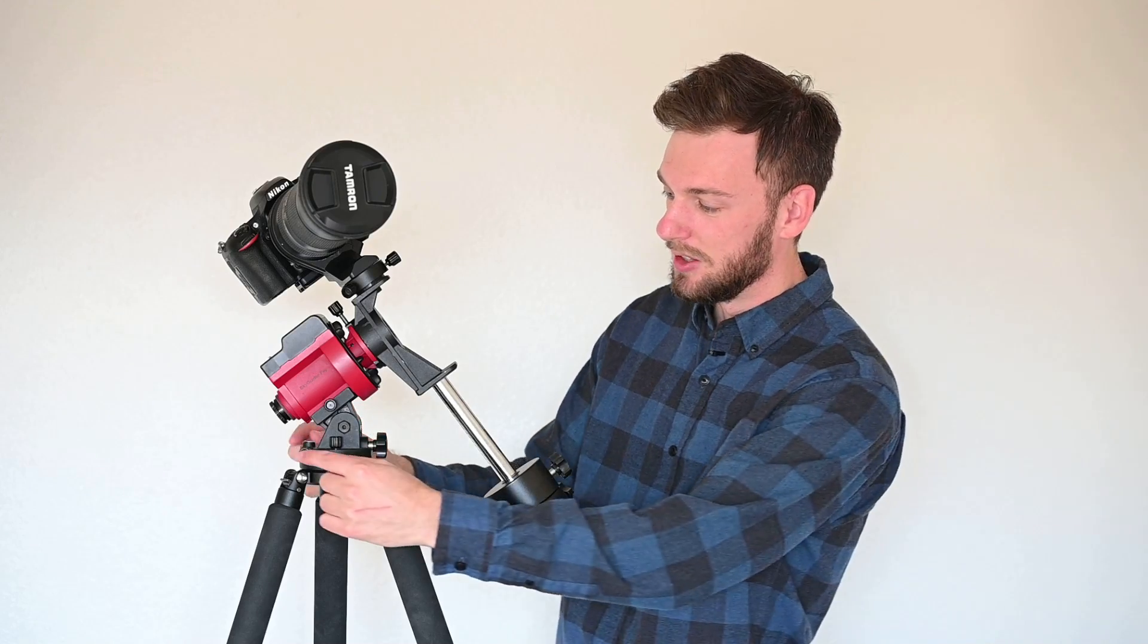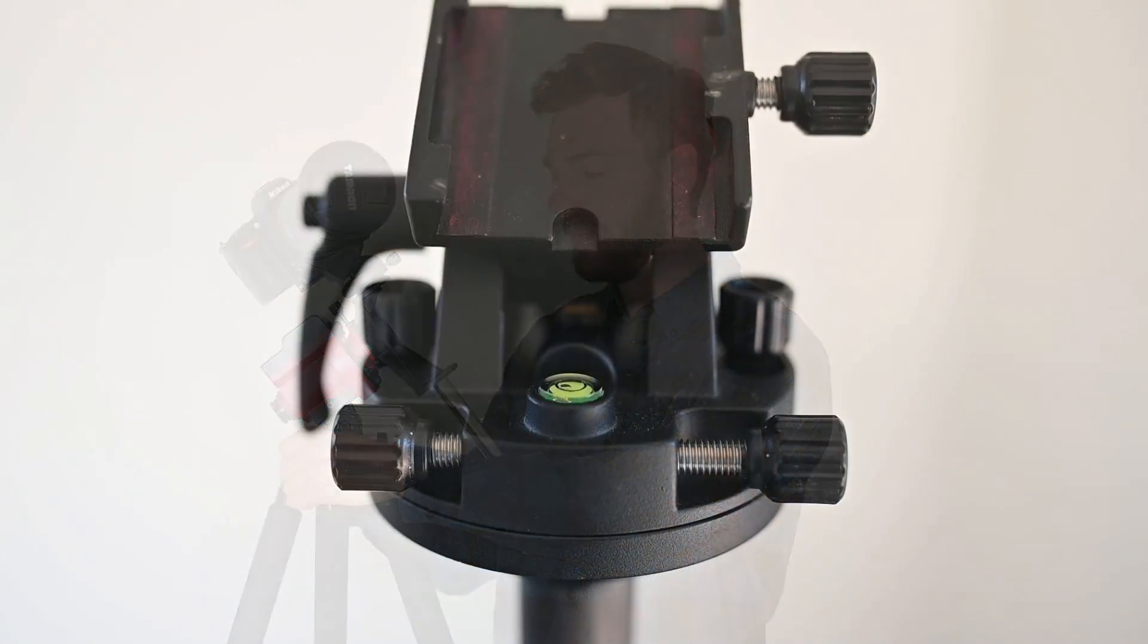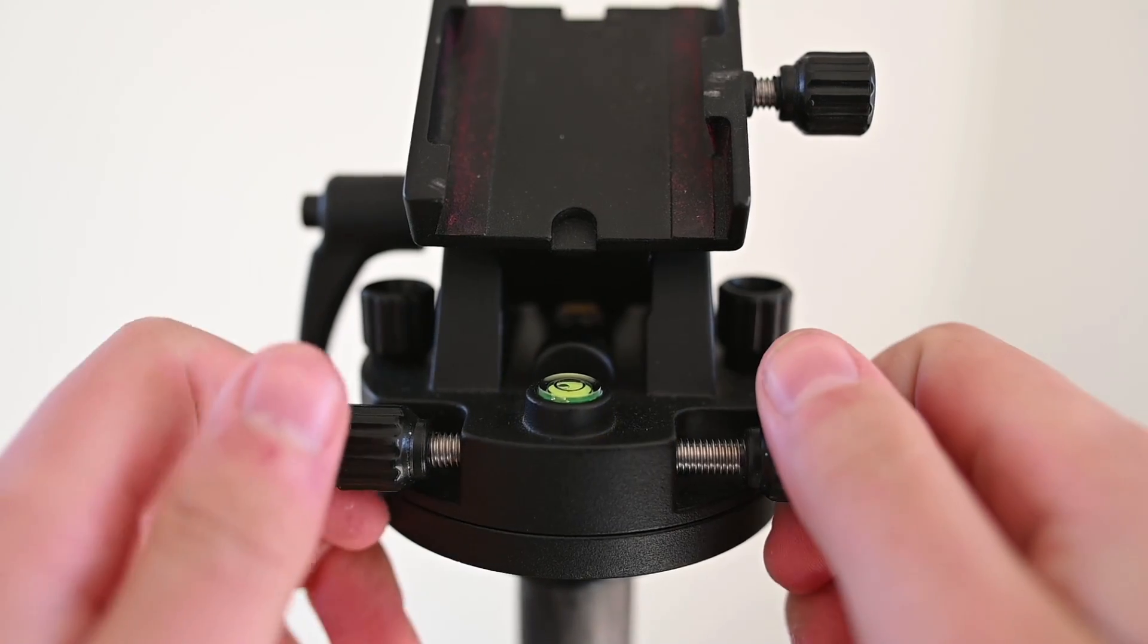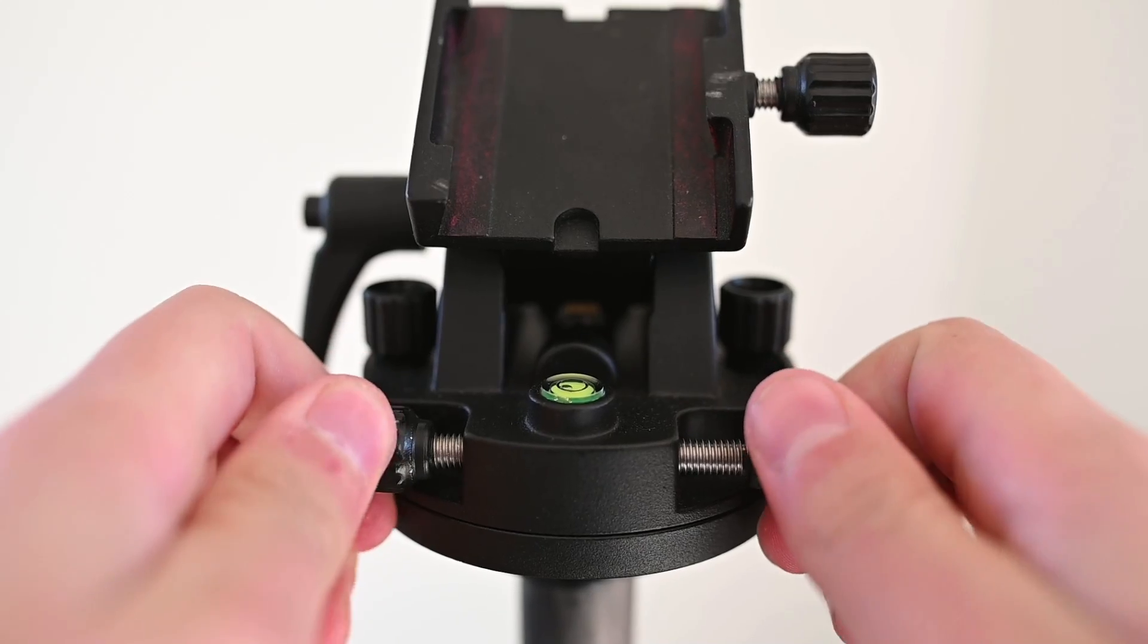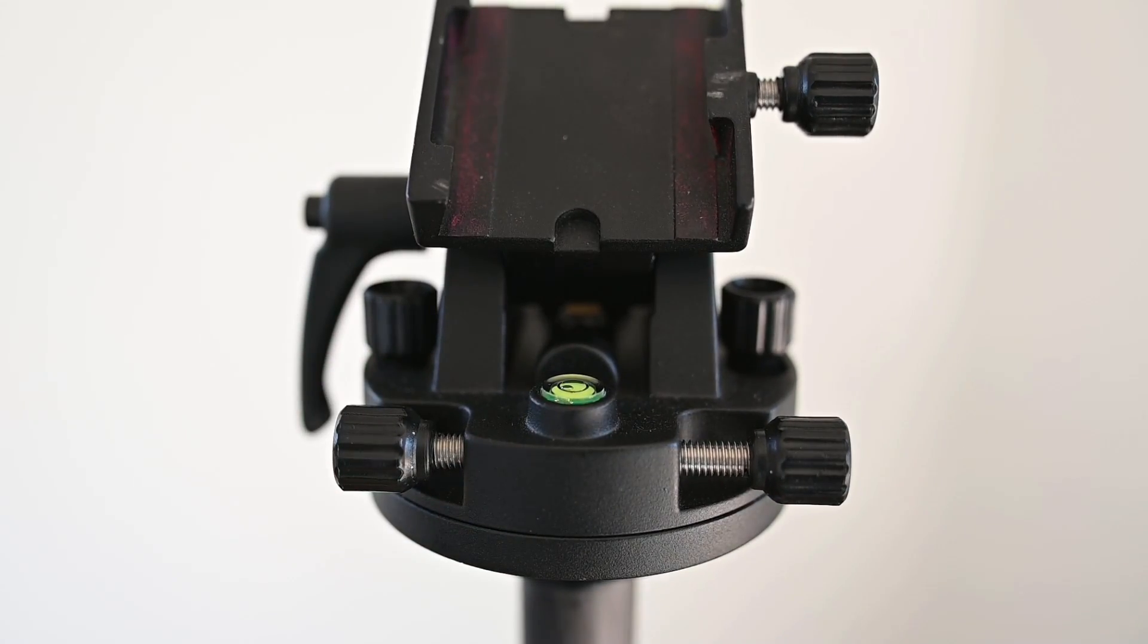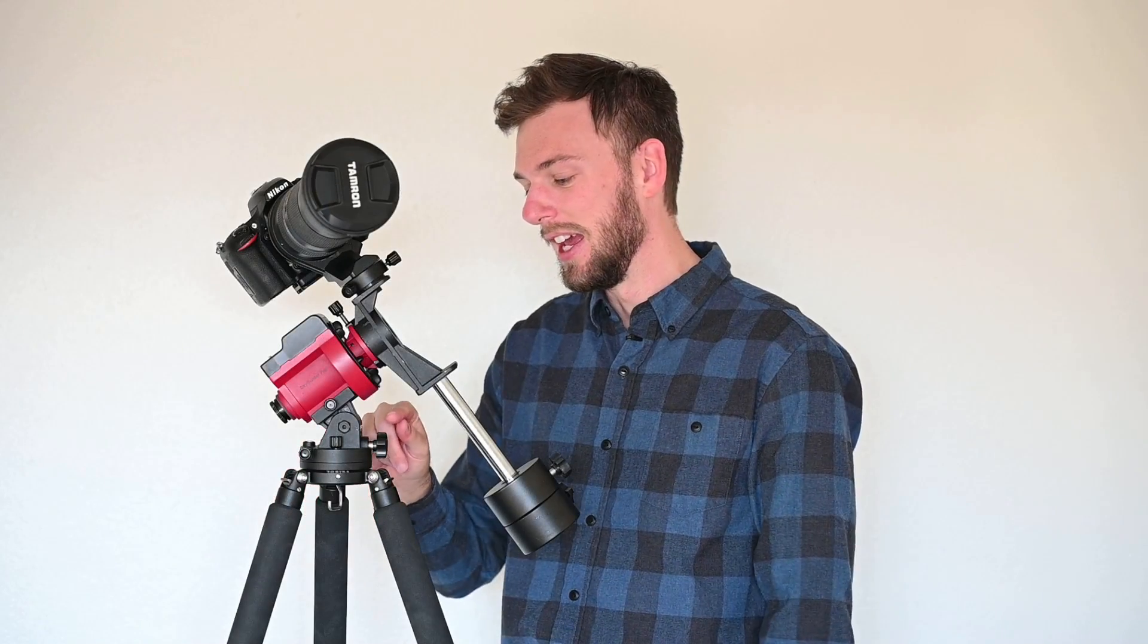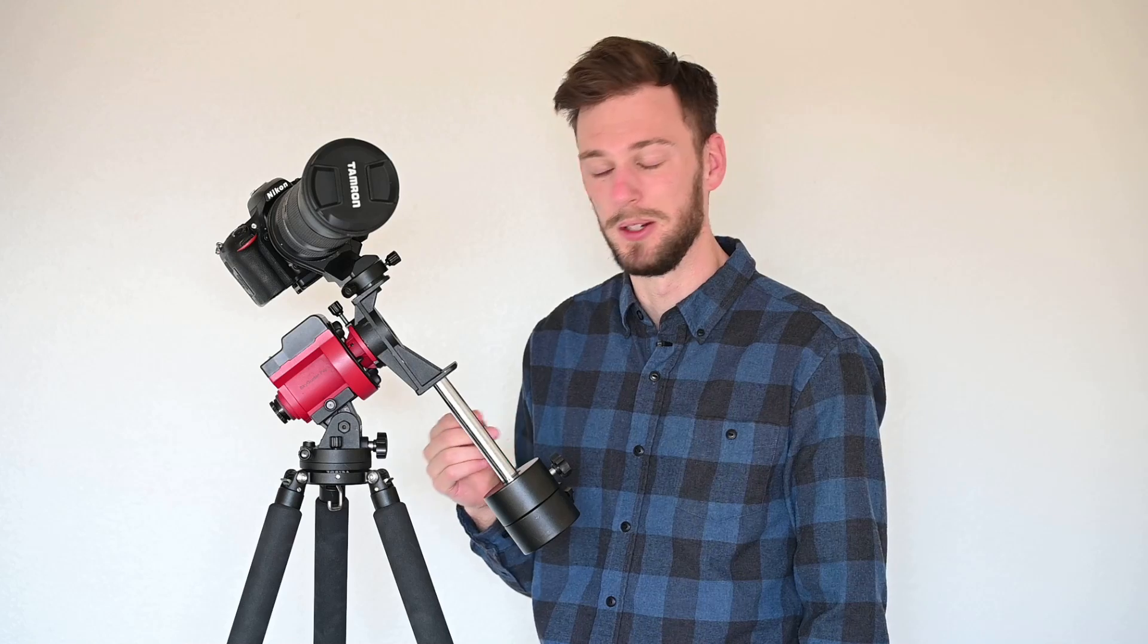The other problem is that the screws here on the base and the knob, when you turn them, very often you'll run out of space, which means if you're trying to do your polar alignment you get stuck. In my case I have to pick up the whole tripod and move things. These adjustments also aren't very precise at all, so the star will just jump around and it's very hard to do precise adjustments.